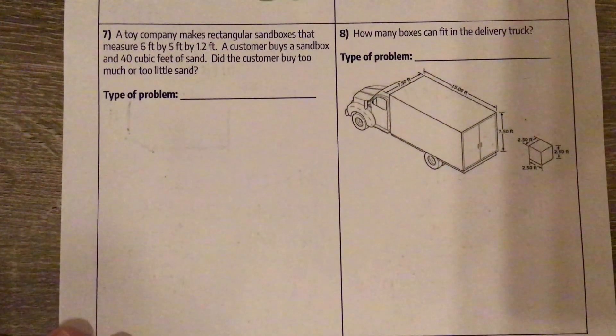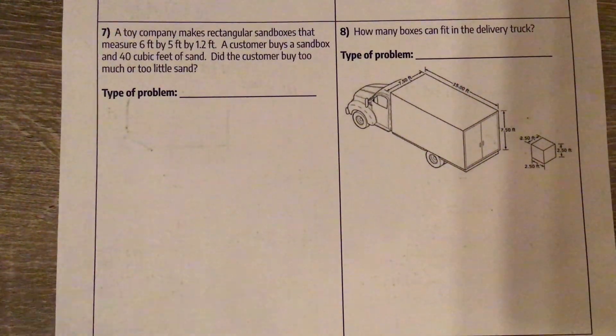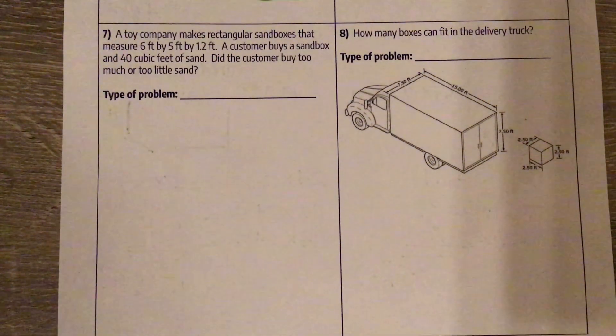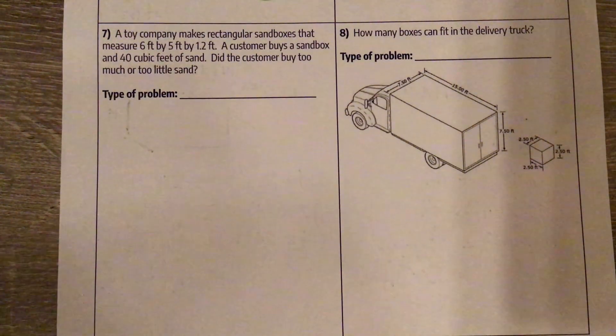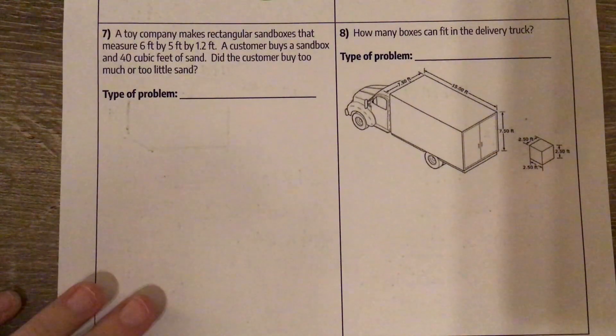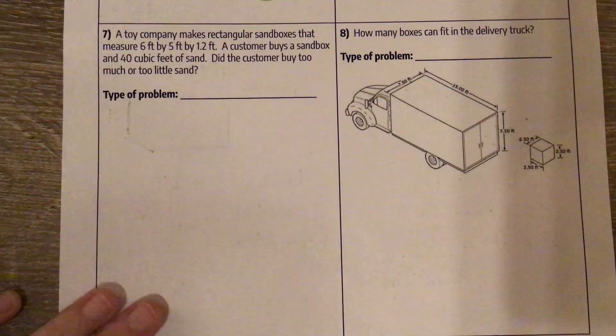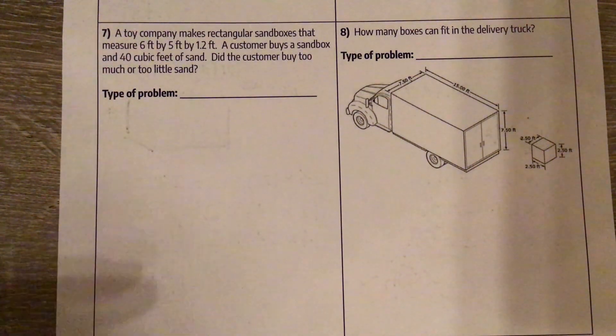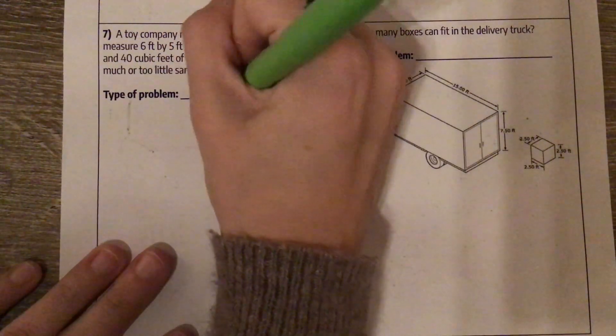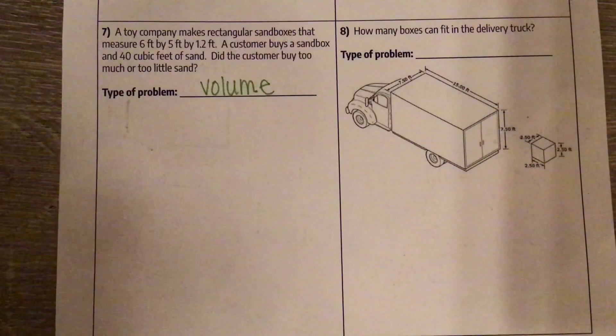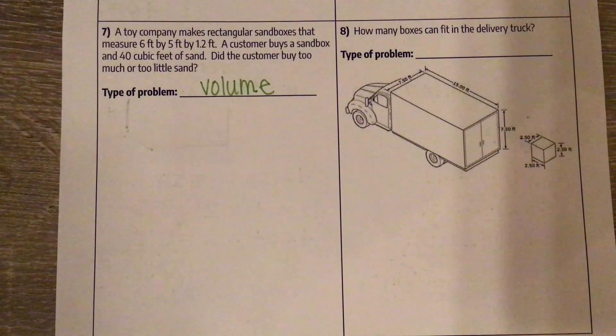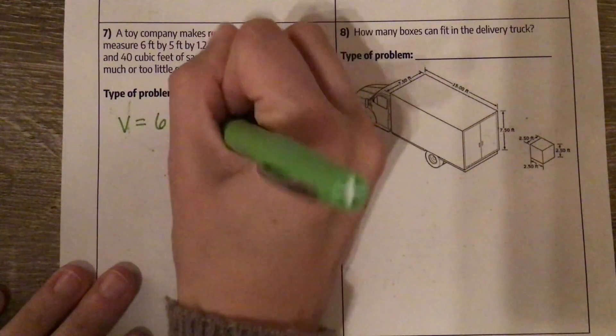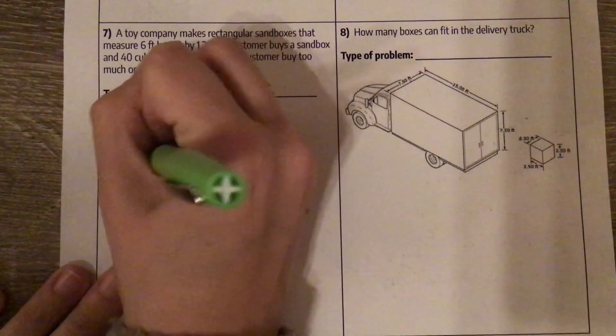A toy company makes rectangular sandboxes that measure 6 feet by 5 feet by 1.2 feet. A customer buys a sandbox and 40 cubic feet of sand. Did the customer buy too much or too little sand? We're talking about sand, that's taking up the whole entire space, so we're looking at volume. And specifically a rectangular sandbox, so I'm just multiplying 6 times 5 times 1.2.